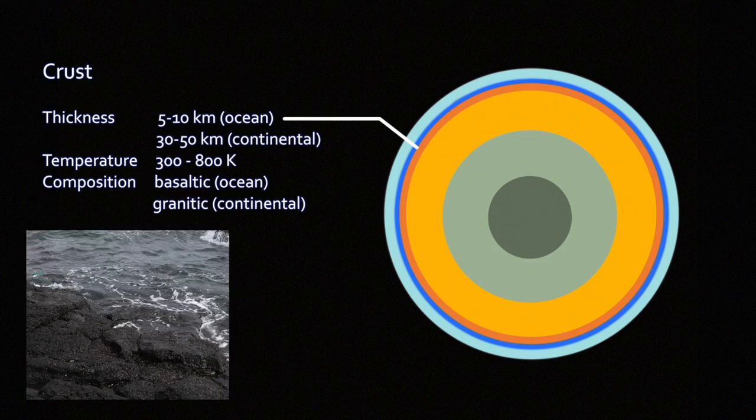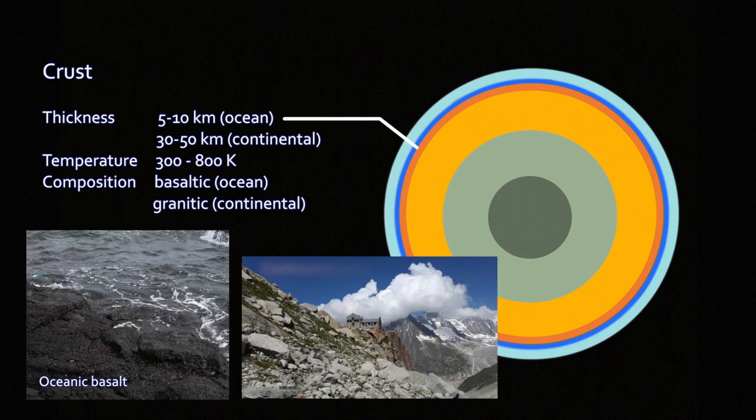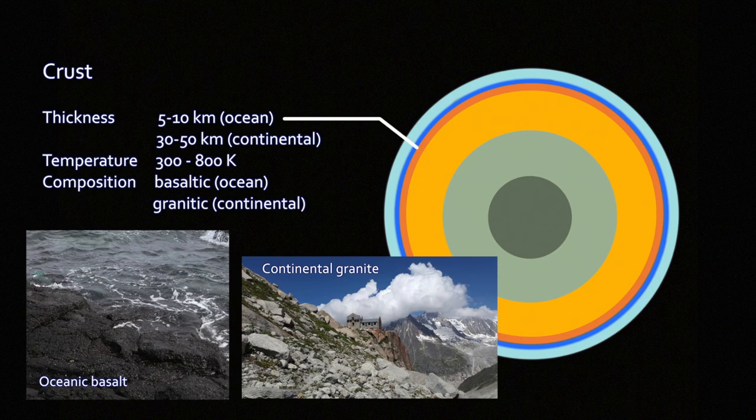The ocean crust, which is made of denser basaltic rock, iron-magnesium-rich silicates that are less dense than mantle rock. The ocean crust is only about 5 to 10 kilometers thick. It's much thinner than the continental crust. The continental crust is much thicker than the ocean crust. It's 30 to 50 kilometers thick. And it's different in composition. It's less dense.